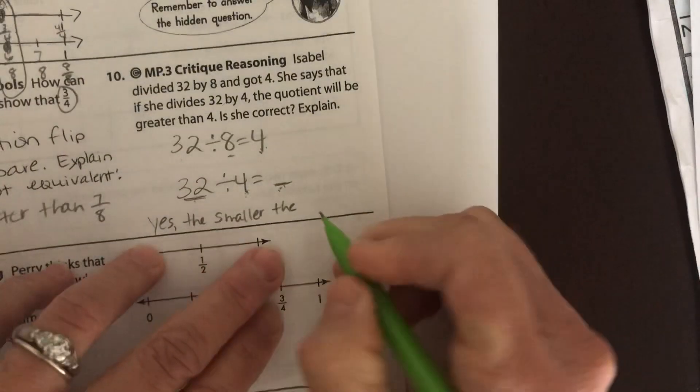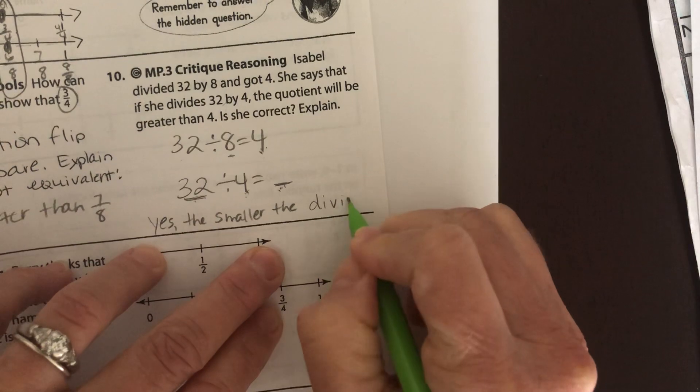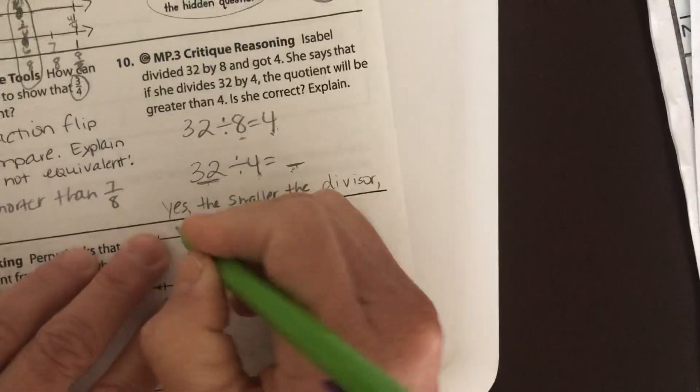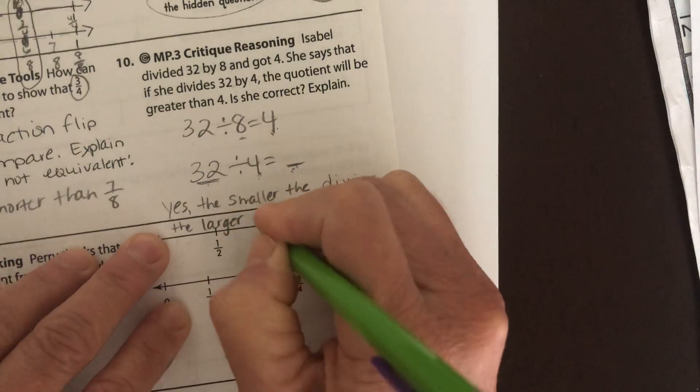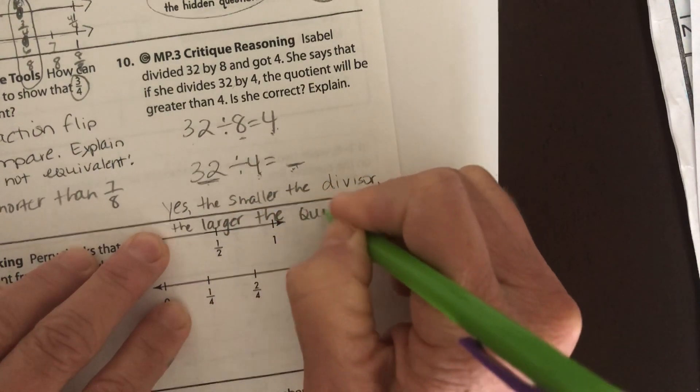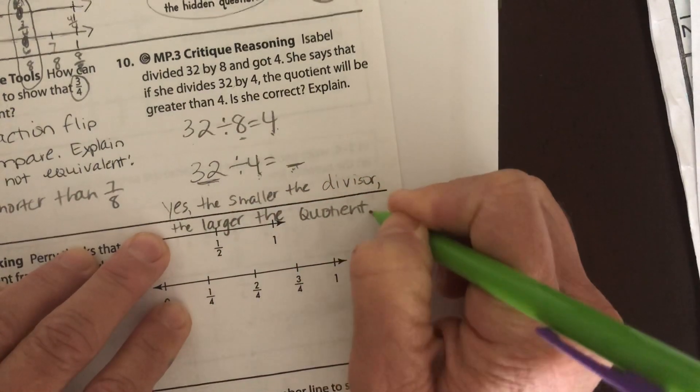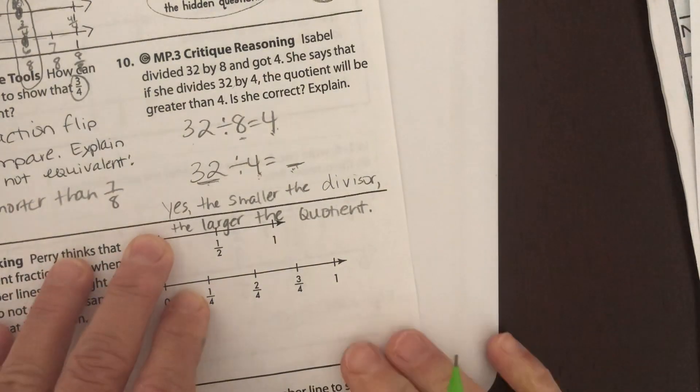The smaller the number you divide by, the more each person gets, right? Remember that fancy Nancy term? Divisor. The smaller the divisor, the larger the quotient, which is that fancy Nancy term for answer, for answer division.